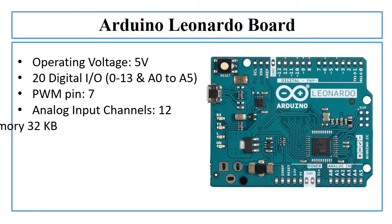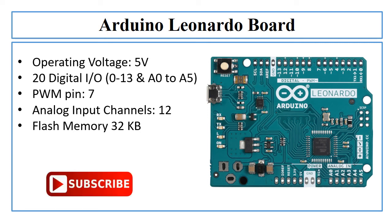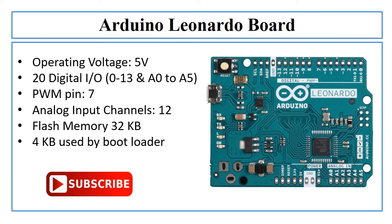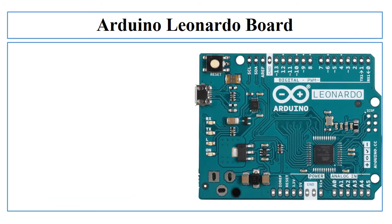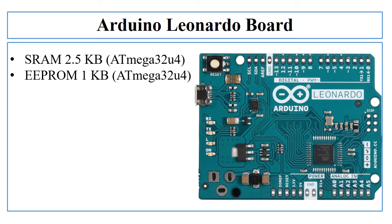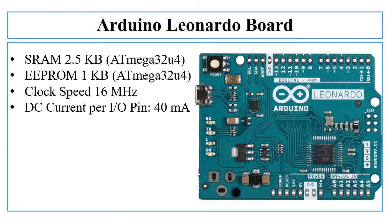The flash memory of the Arduino Leonardo board is 32 KB, of which 4 KB is used by the bootloader. The static RAM of the Arduino Leonardo board is 2.5 KB. EEPROM is 1 KB, and the clock speed of this board is 16 MHz. The DC current per input-output pin of this board is 40 mA.